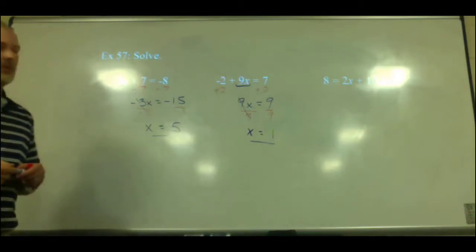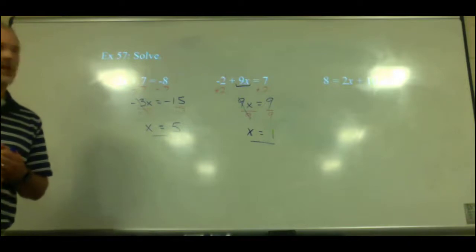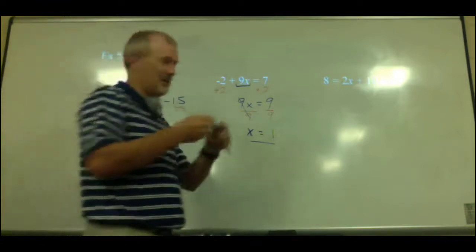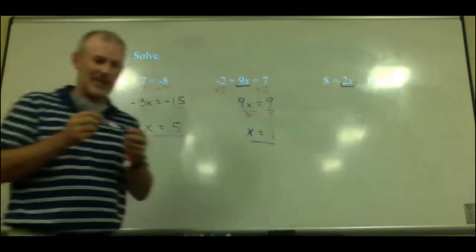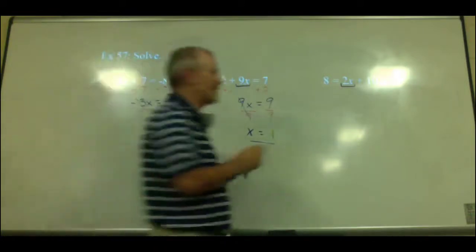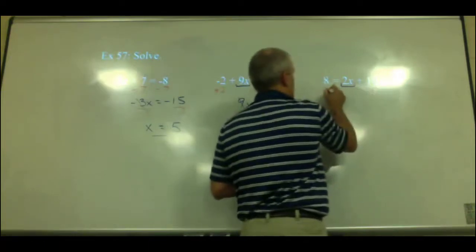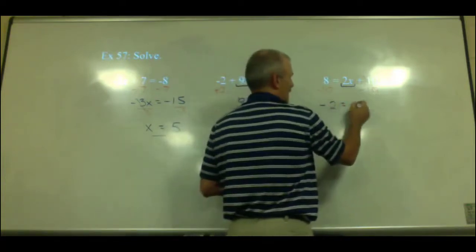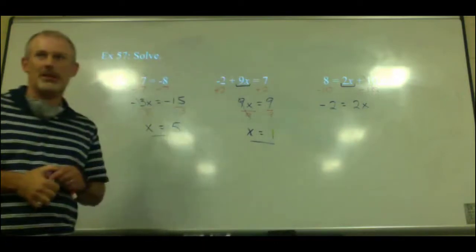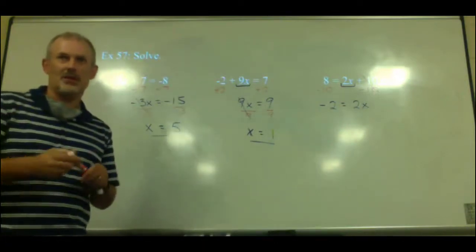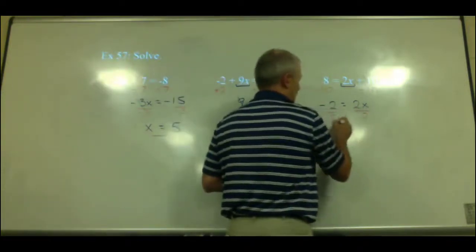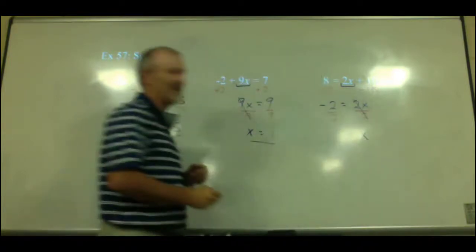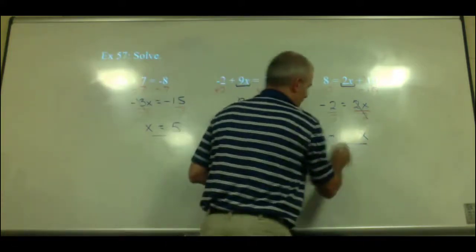Last one — the sides are switched this time. What numbers are we canceling to get x by itself? The 10 and the 2. Which is grouped with x? The 2. Get rid of the 10 first by subtracting 10 from both sides. 8 minus 10 is negative 2, leaving 2x equals negative 2. Divide by 2 on both sides; the 2s cancel, and negative 2 divided by 2 is negative 1.